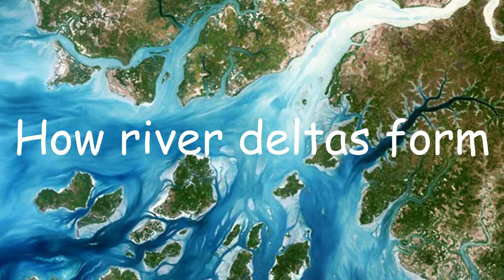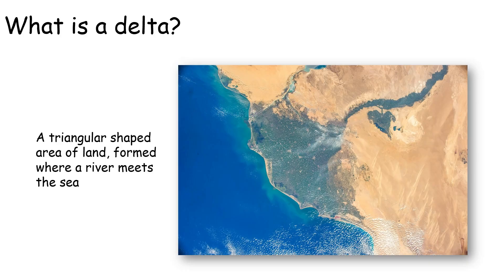In this video, we're going to have a look at what river deltas are, how they form, and we'll have a quick look at the river Nile. A river delta is a usually triangular wedge or area of land found where a river joins the sea. This is the river Nile heading down towards the Mediterranean Sea, and this triangular area of land is the delta.